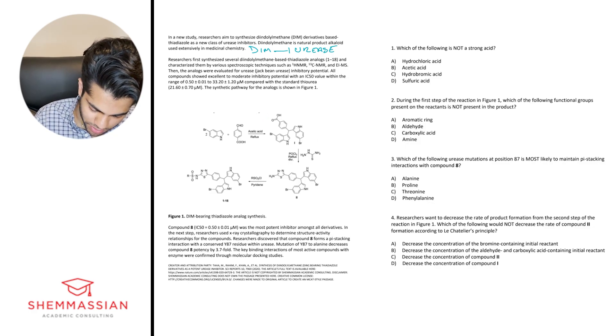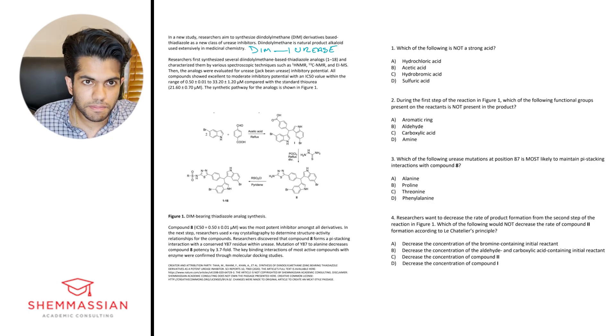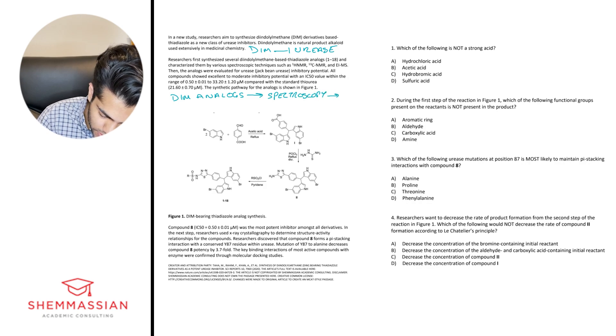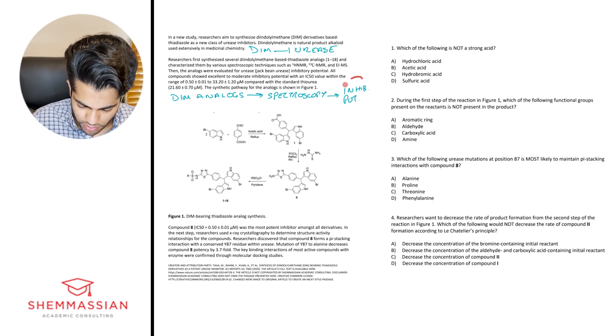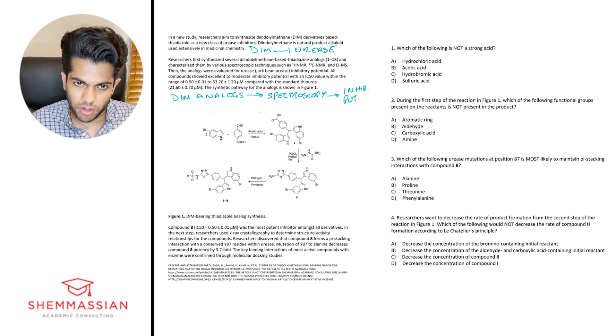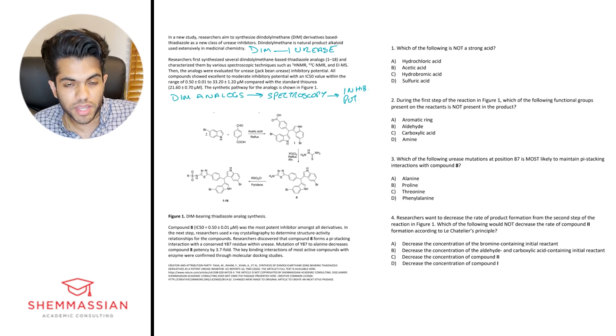And then the synthetic pathway for the analogs is shown in figure one right here. Alrighty, so after reading that paragraph, we can also see, yep, this is the pathway where we're forming these analogs, right? Compounds 1 through 18. So a lot is really discussed there, but just to really break it down, what I'm getting is that there are these DIM analogs that they had synthesized. Then they analyzed them using spectroscopic techniques, right? H NMR, NMR, right? So I would put spectroscopy. And lastly, they just kind of talked about the inhibitory potential, right? So I'll just put inhibitory potential, just kind of using my own little shorthand here. I know what that means. And since this outline is kind of for me, that's going to be okay. So use shorthand in your outlines as well, just to save some time.